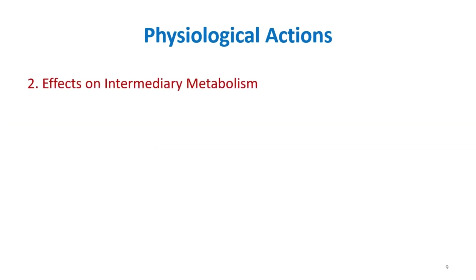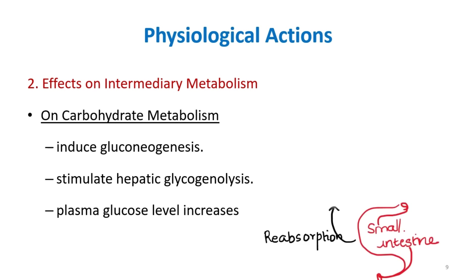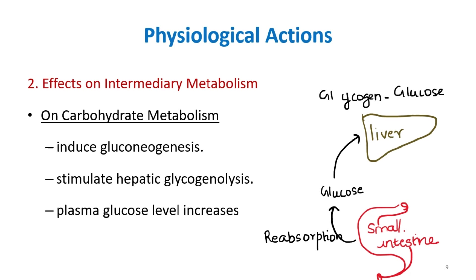The effect on intermediary metabolism covers carbohydrate, fat, and protein metabolism. On carbohydrate metabolism, thyroid hormone increases reabsorption of glucose from the small intestine and in the liver stimulates conversion of glycogen to glucose, which is hepatic glycogenolysis. It also induces gluconeogenesis, thereby increasing plasma glucose levels transiently.